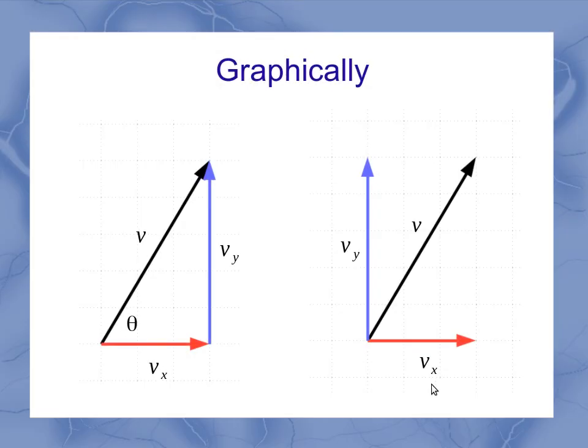Now graphically, we still have the same sort of triangle we had for position, but we recognize that this vector v is not the position vector; it's the velocity vector. But it still has components of vx and vy, whether you want to draw that as a triangle or the projections of the velocity out onto the x and y-axis.